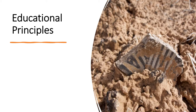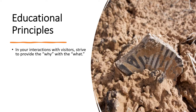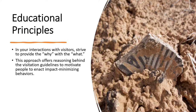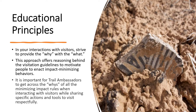In the slides that follow, we will first discuss the reasons why we want people to minimize their impact, followed by the concrete steps and rules of what they can do to reduce their impacts. In your interactions with visitors, strive to provide the why with the what. For example, it might not be very persuasive to leave a piece of pottery where you find it just because it is the rule. But if you understand this pottery belongs to ancestors of contemporary tribal members, and leaving it shows respect, could help archaeologists more accurately interpret the area, and that it is illegal to take pottery — you might be more compelled to leave it. It is important for Trail Ambassadors to get across the whys of all the minimizing impact rules when interacting with visitors.